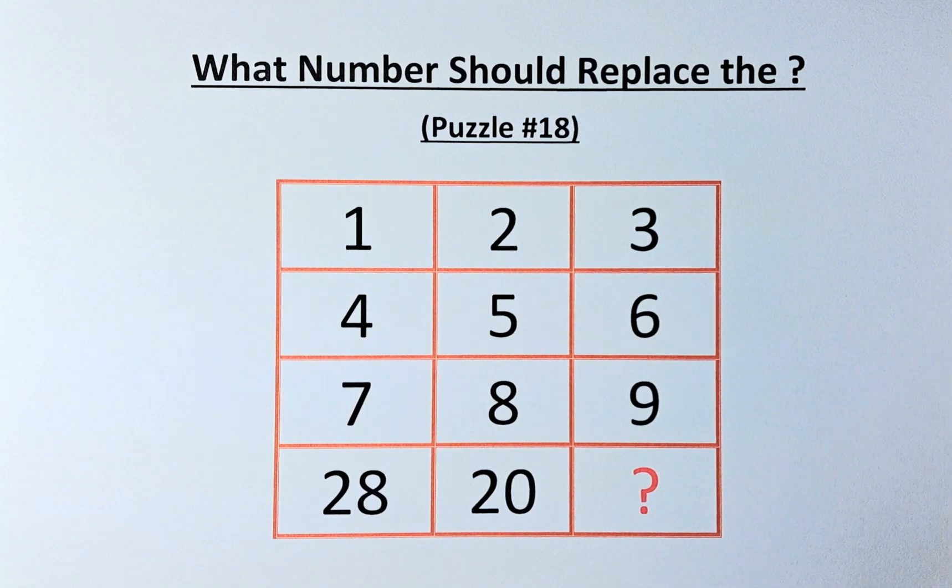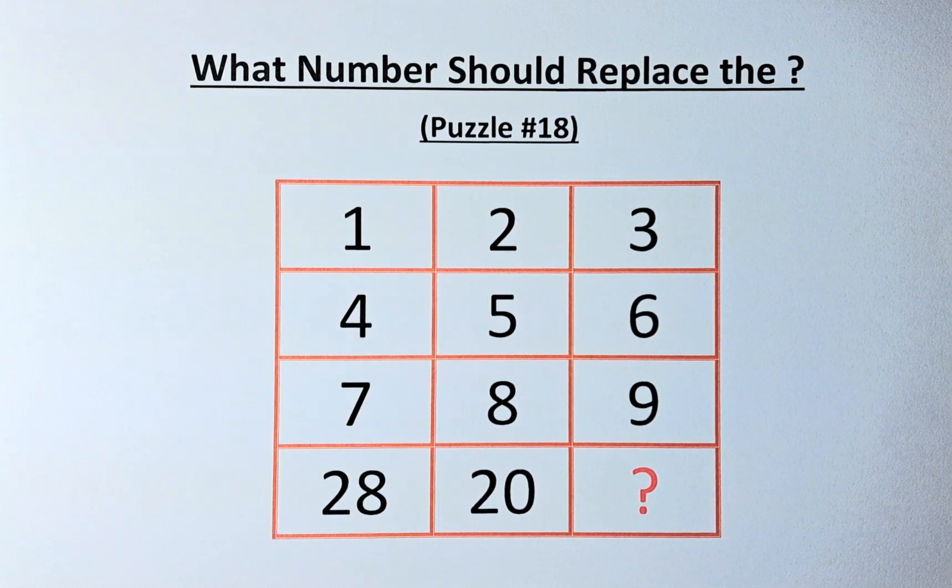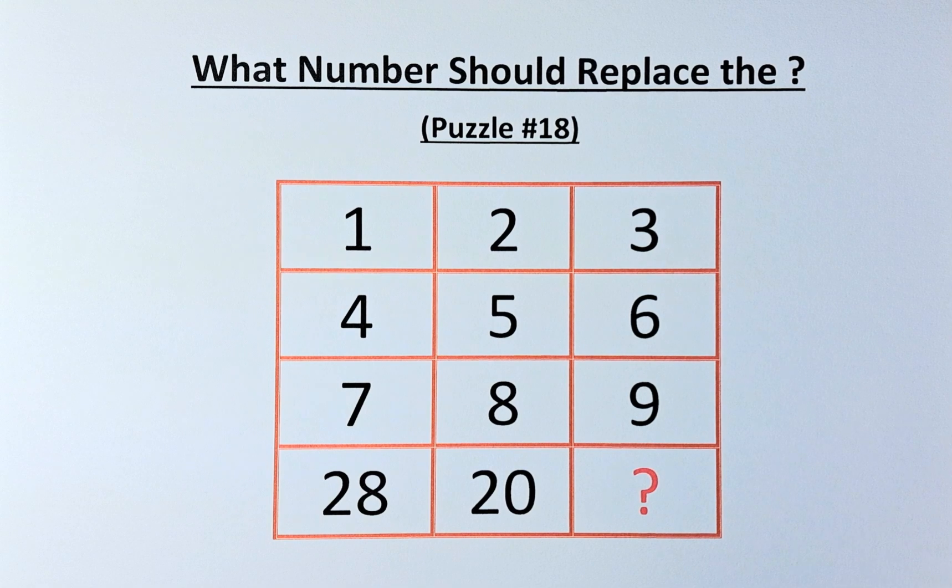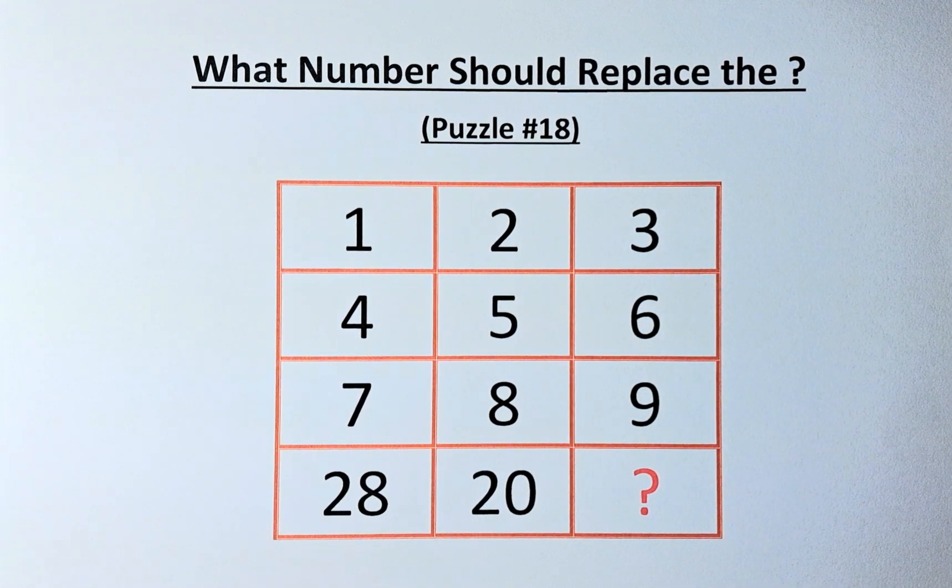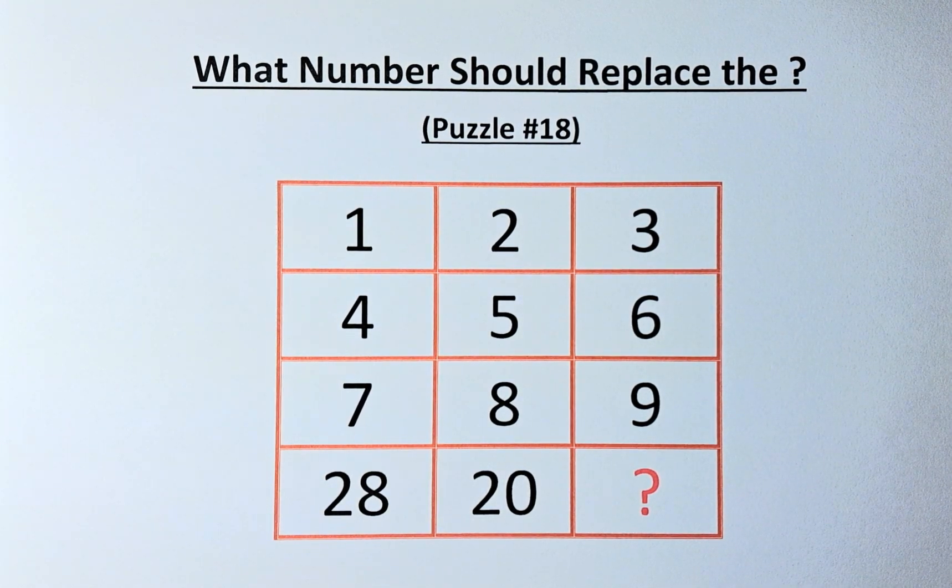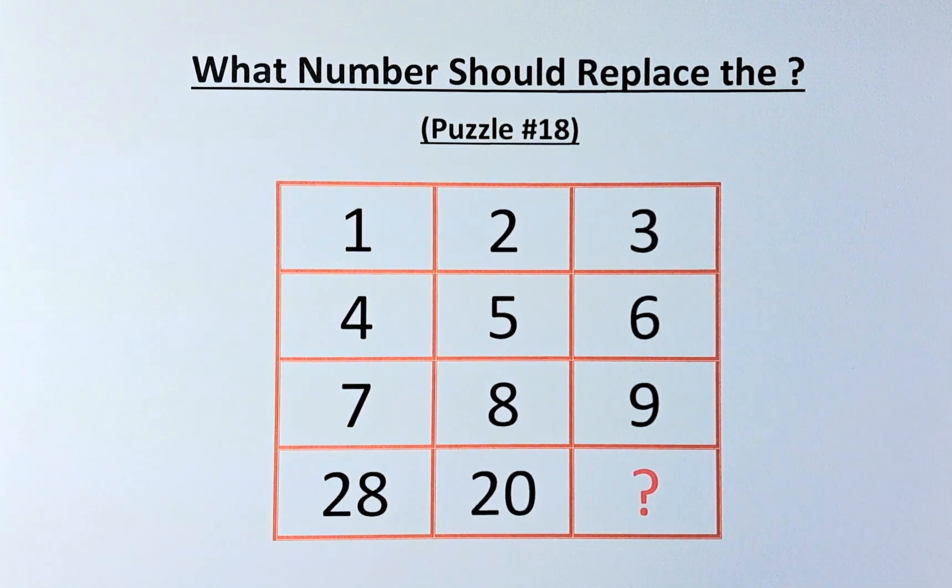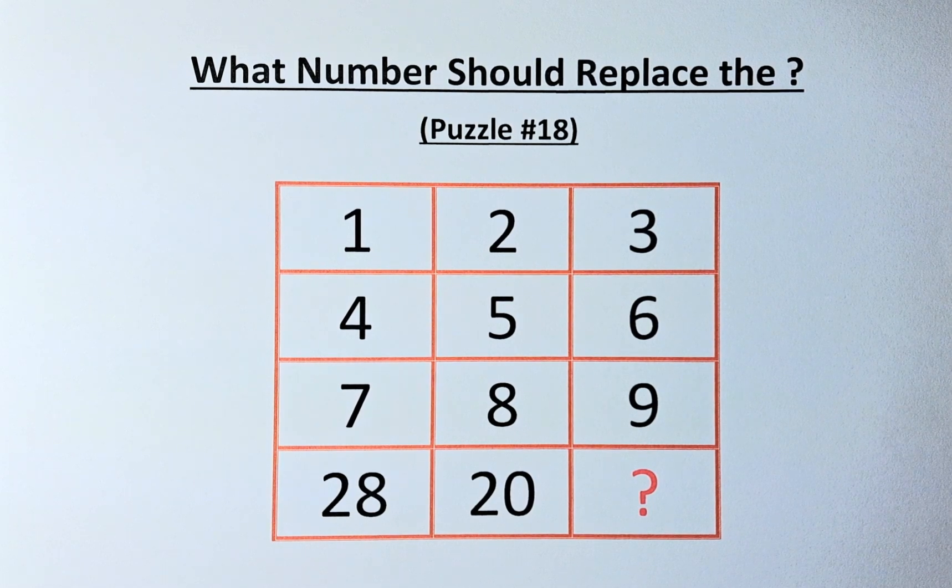Welcome back to the solution of puzzle number 18. What number should replace the question mark? The numbers in the puzzle are 1, 2, 3 in the first row, 4, 5, 6 in the second row, 7, 8, 9 in the third row, and 28, 20, and a question mark in the final row.